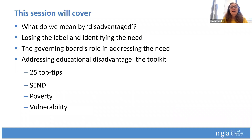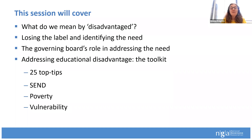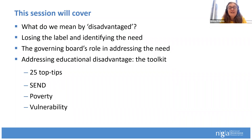So in this session, we're going to be talking about what do we actually mean by disadvantaged, and then how can we actually lose the labels and hone in on the needs? What exactly is your role as the governing board in addressing that need or ensuring the need is addressed? And then we will be talking about the toolkit that we are publishing today, and Fiona will talk in particular about 20 top tips in there, but also SEND, poverty, and vulnerability.